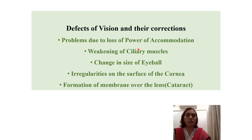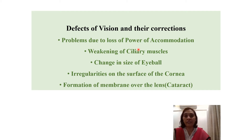We have studied what the power of accommodation is — how the focal length is changed by the lens by changing its size. When we are viewing a distant object the lens becomes thin, and when viewing nearby objects it bulges out and the curvature increases, bringing about the change in focal length. The adjustment or power of accommodation of the eyes is very strong — you can try this by looking at a distant object and then immediately at a nearby object. This quick adjustment of focal length by the eye lens is what we refer to as the power of accommodation.